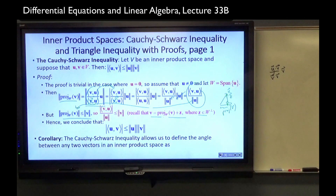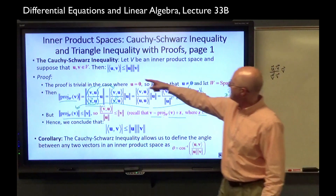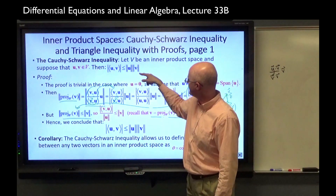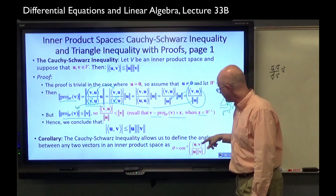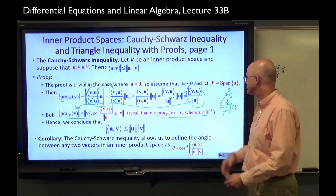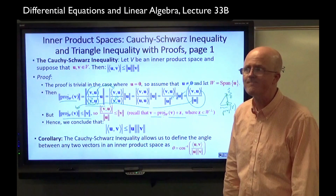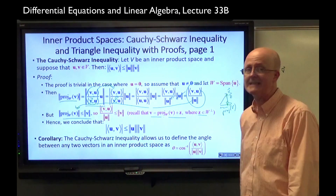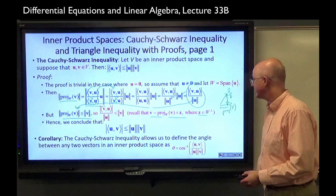A corollary of the Cauchy-Schwartz inequality is that it allows us to define the angle between two vectors in an inner product space as the inverse cosine of the inner product of U and V divided by the product of their magnitudes. The Cauchy-Schwartz inequality guarantees this ratio lies between negative 1 and 1 — exactly the domain of the inverse cosine function. This is especially useful when theta is 90 degrees or pi over 2 radians, i.e., when the vectors are orthogonal.